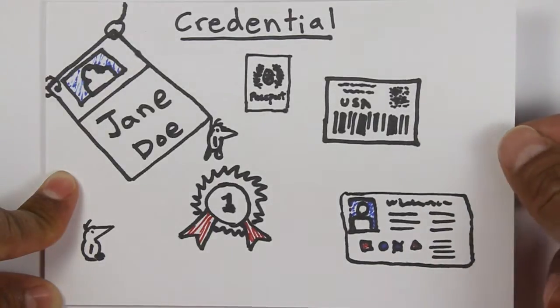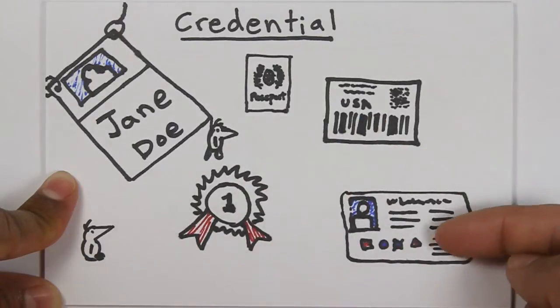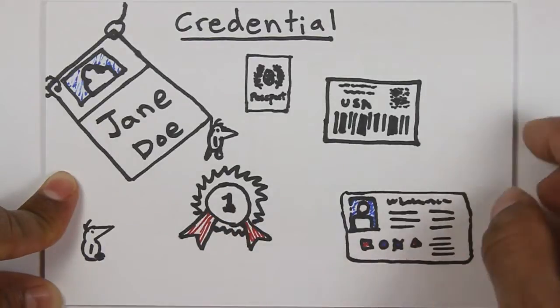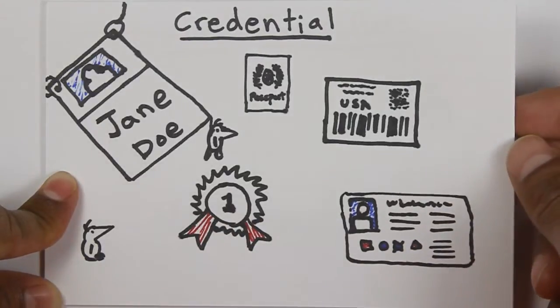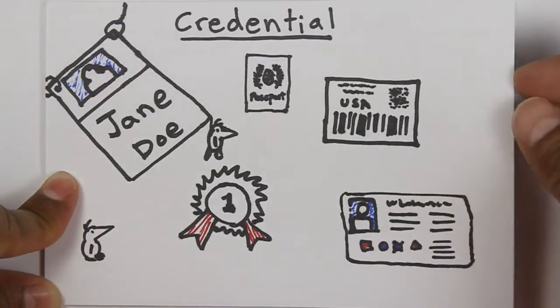There are many different types of credentials - passports, shipping addresses, driver's licenses, ID cards, prizes that you've won. What we're trying to do is figure out a way to get all of these credentials onto the web.